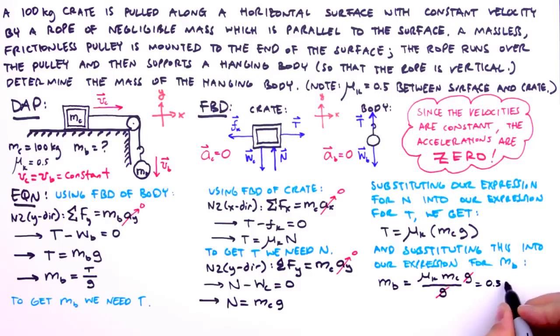Lastly, we insert our values for the coefficient of kinetic friction and the mass of the crate. And we find that the mass of the hanging body is 50 kilograms. And we're done with our first pulley problem.